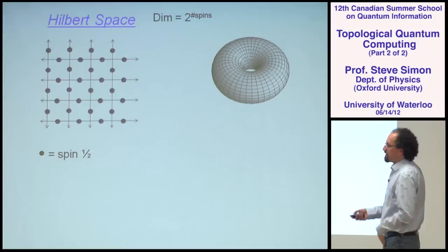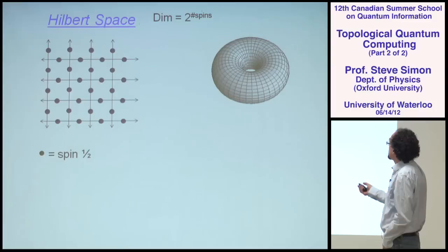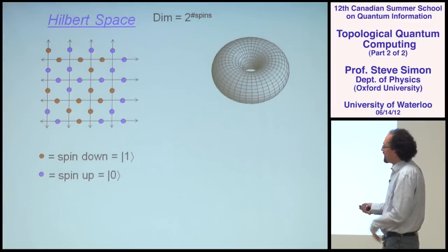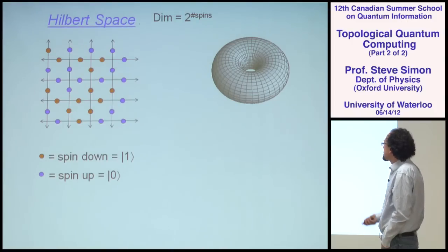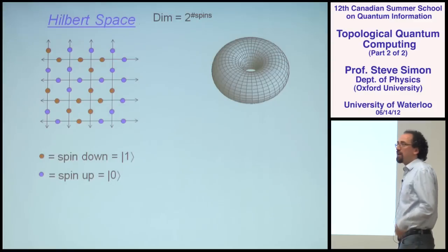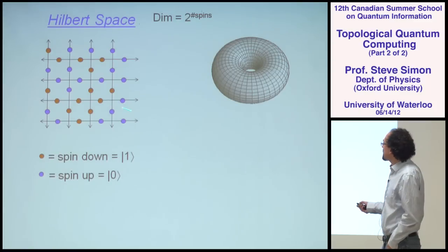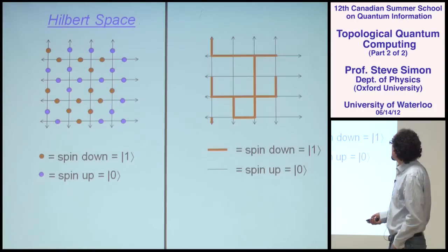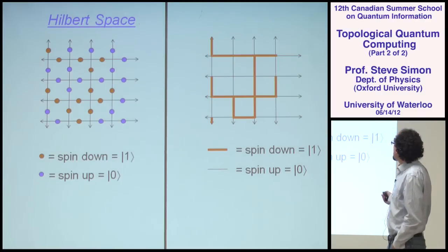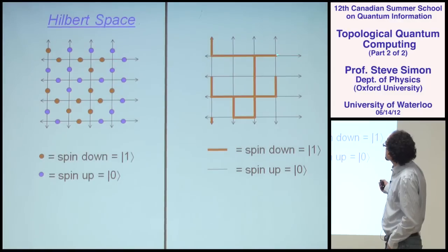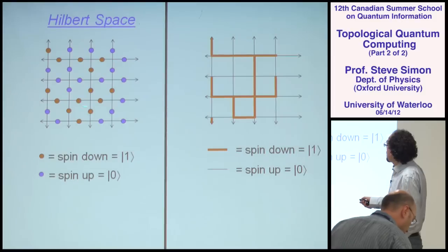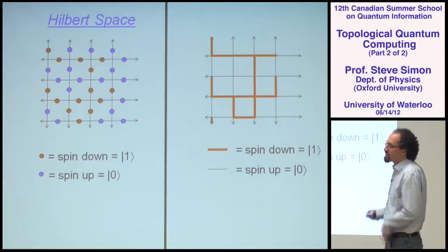If I want to describe one of the basis states in this Hilbert space, I can do so by just specifying which of the spins are spin up and which ones are spin down, or which ones are zero and which ones are one. Here I've painted all the down spins red. I'm going to paint the bond red if the spin is down, or in the one state, and leave it unpainted if it's in the up state. So you can see that these are really the same pictures.